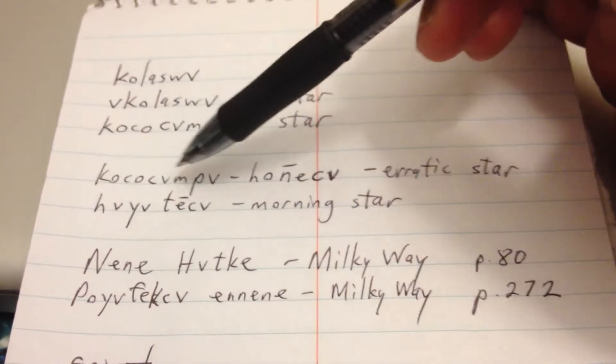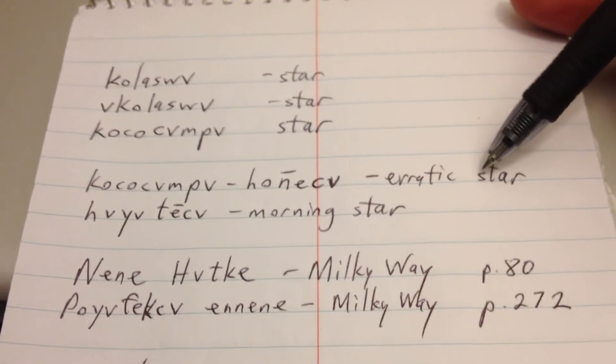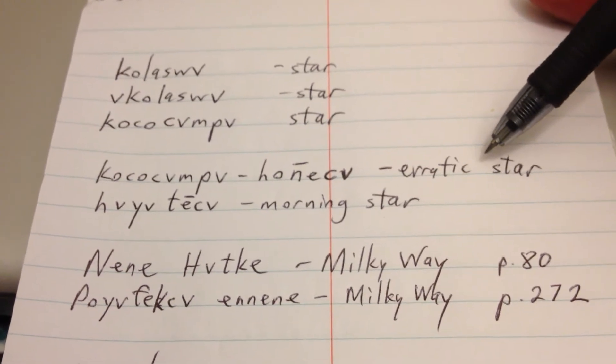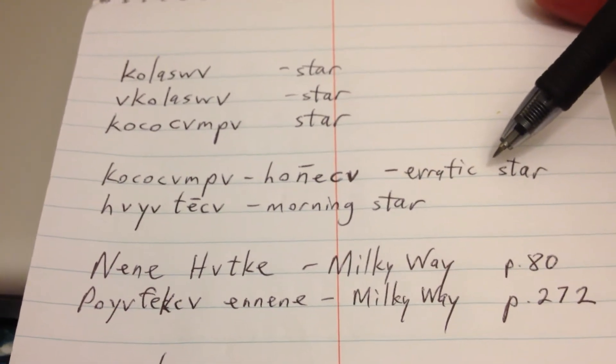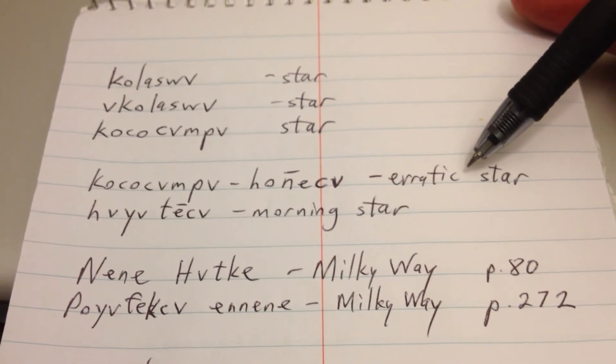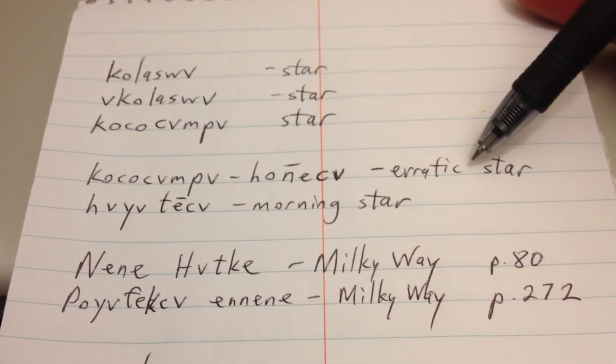Coming down we have kojachumpa honicha, erratic star. This might refer to a shooting star or a meteor or possibly to planets like Venus and Mars and Jupiter, which took a different path across the sky than the stars which appeared to be fixed in the dome of the sky as it rotated. That's because they were within our solar system of course.